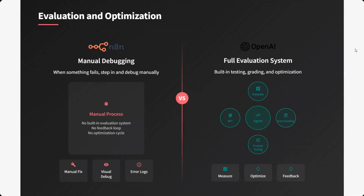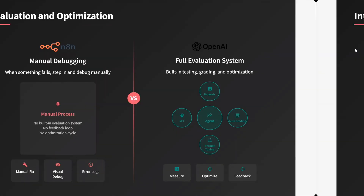On evaluation and optimization, n8n takes a big hit — it doesn't have any debugging system. If something fails, you need to step in manually and debug it. While in the case of OpenAI's Agent Kit, a full evaluation system is present. Hence, OpenAI Agent Kit is way ahead compared to n8n here.